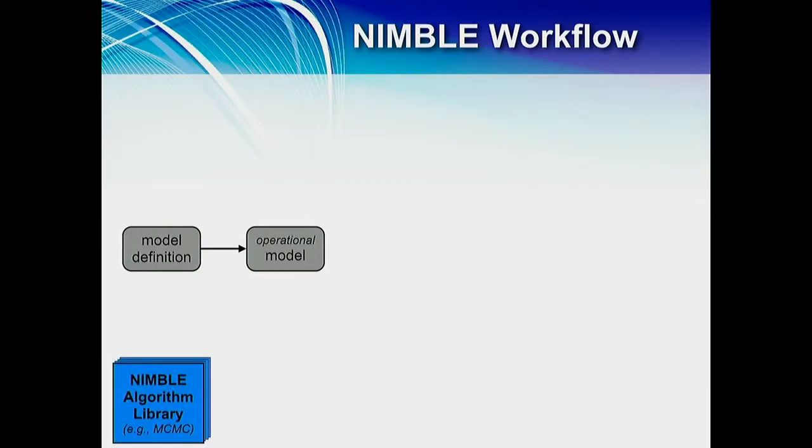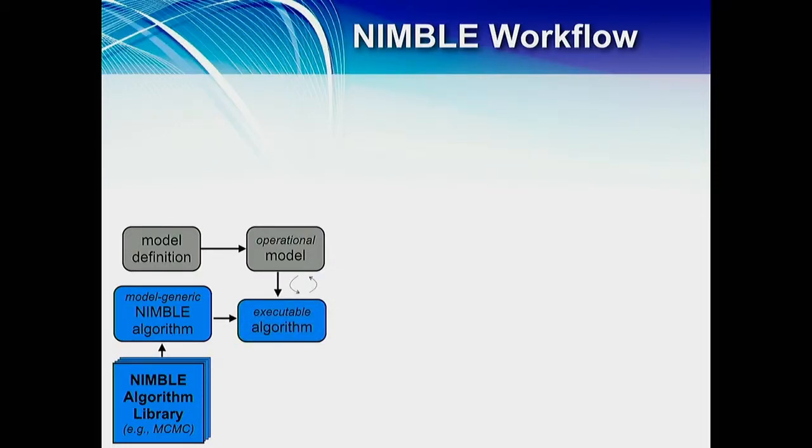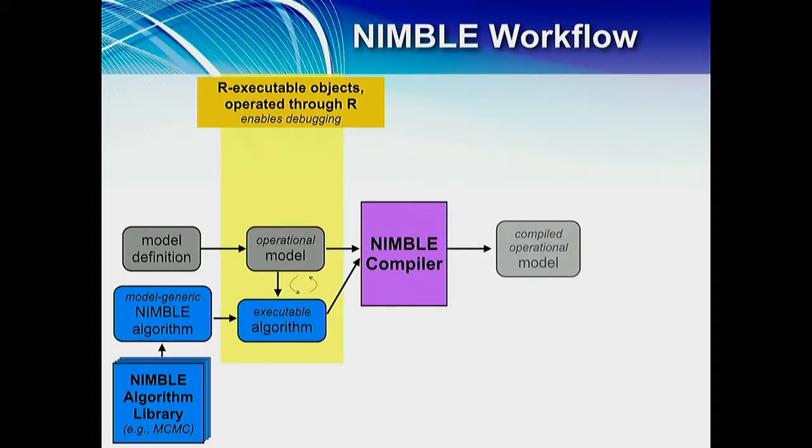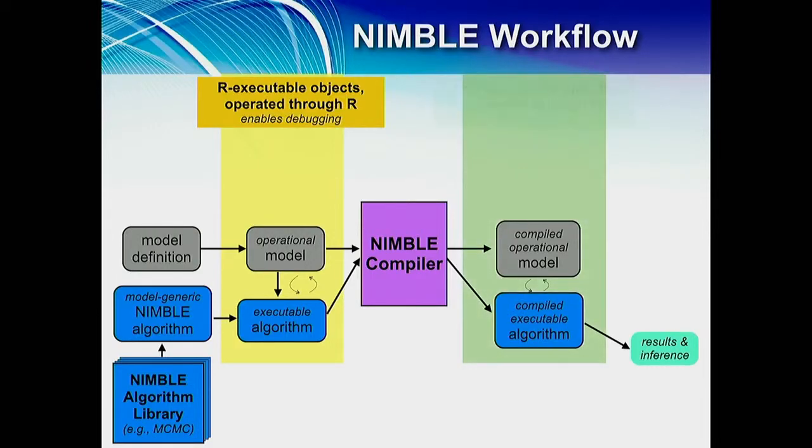We then might turn to the NIMBLE algorithm library, providing a huge source of pre-written algorithms. Choose one, say MCMC for example. Algorithms in NIMBLE are written as being model generic, that is each one can apply to any hierarchical statistical model structure. These are then combined to form an operational executable algorithm. Now these objects at this point are R objects executing from R, which enables debugging. We then would put these into the NIMBLE compiler, which would produce compiled operational model object, and similarly a compiled executable algorithm. Now these objects are compiled C++ code which still operate from the R workspace. So still working within R, we're now operating compiled objects for speed of execution.